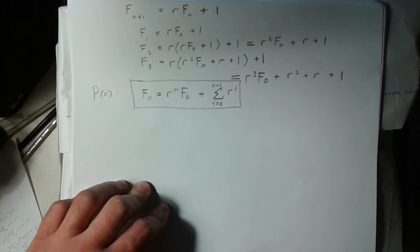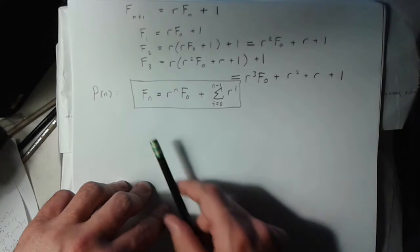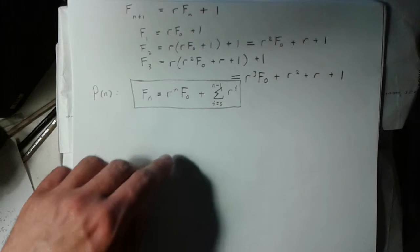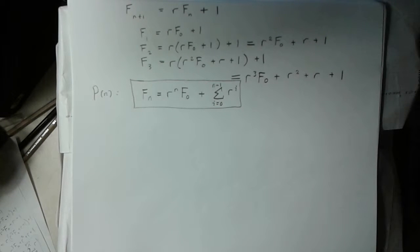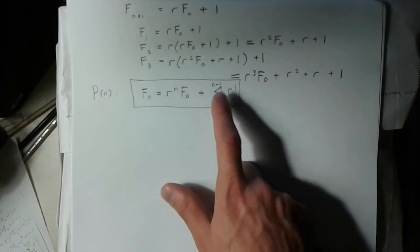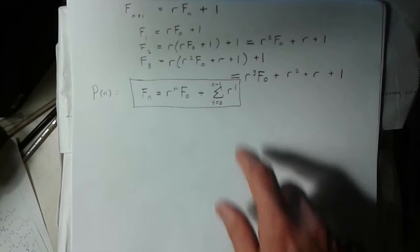I already know that p of 1 is true because that would be f1. That would just be this thing here. f1 is equal to r times f0 plus 1. In this case, we have the sum is going from 0 to 0, so we only have the 0th term.